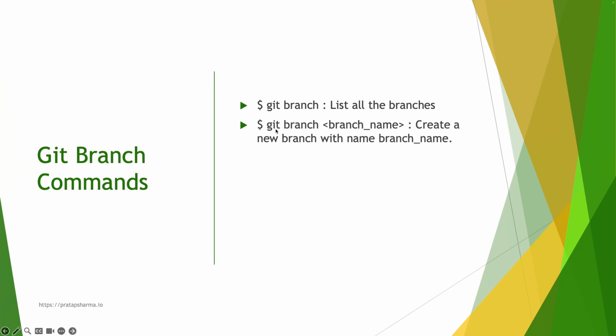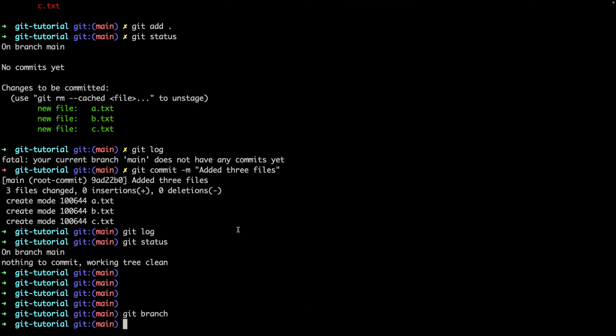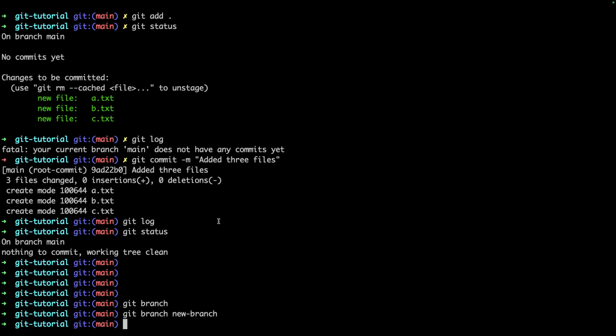We need a branch to create a copy of our original branch so we can make changes, test, and then request to merge back. To create a branch, use `git branch` followed by the branch name. For example, `git branch new-branch`. If I check `git branch` now, I can see two branches: the main branch and the newly created new branch.